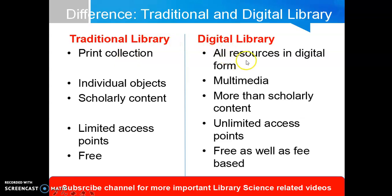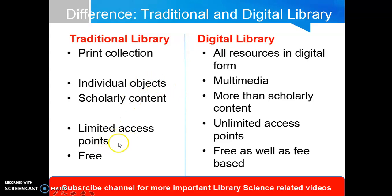A traditional library contains print collections, while a digital library contains all resources in digital form. A traditional library contains individual objects, while a digital library contains multimedia like images, audios, and videos. A traditional library has scholarly content, while the digital library has more than scholarly content. A traditional library has limited access points, while the digital library has unlimited access points. A traditional library is basically free, but the digital library is free as well as fee-based.